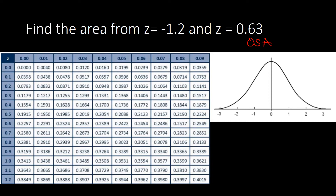OSA means: O for Opposite, S for Sign — if we're not using an illustration, we compare the sign. If we are using the illustration, we look at the side. Signs and sides. A here stands for Add. So this is easy to remember: OSA means opposite side or opposite sides add, or opposite signs add.